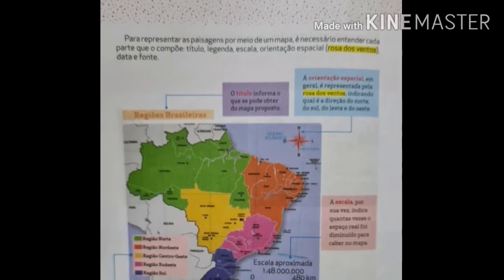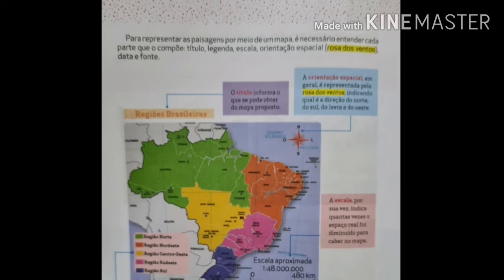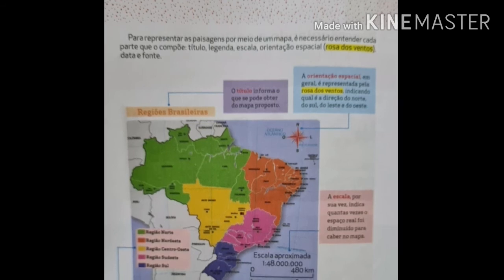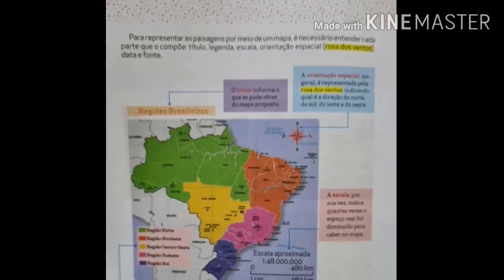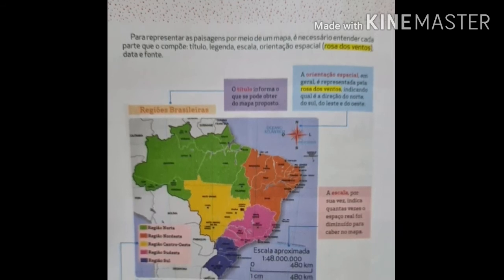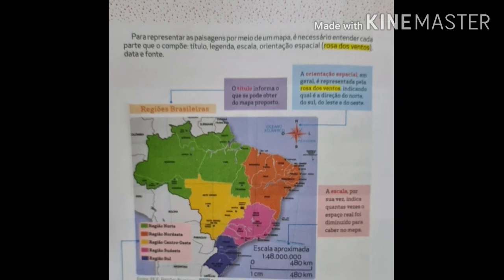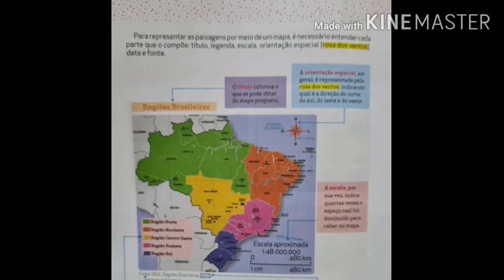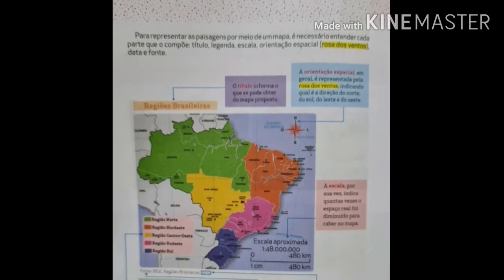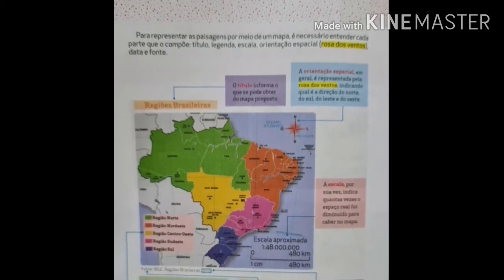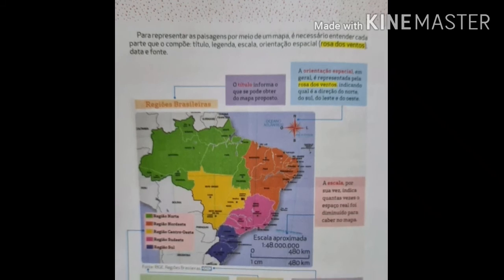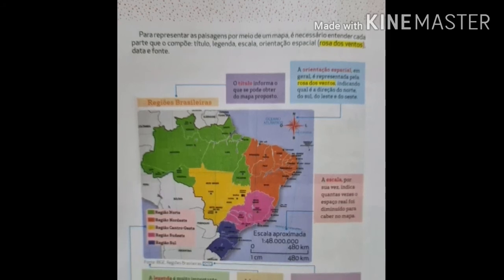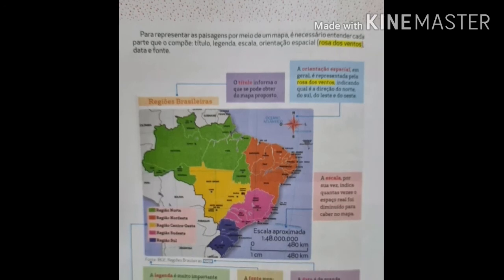Temos também a fonte, que mostra de onde foram retirados os dados que estamos lendo. A fonte aí embaixo, bem pequenininho — a fonte é do IBGE, da região brasileira. E temos a data também, que é de grande importância, pois como já sabemos, os espaços estão em constante transformação, seja pela ação das pessoas ou da própria natureza. A fonte nos mostra que foi através do IBGE, e do ladinho nós temos o ano que essa informação foi adquirida: 2010.